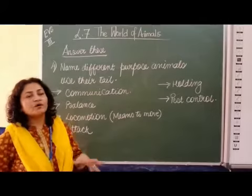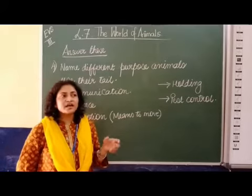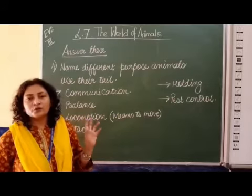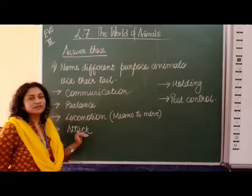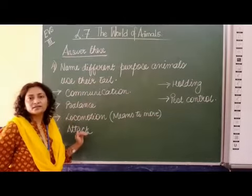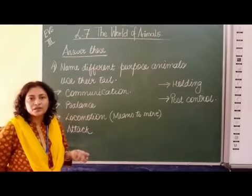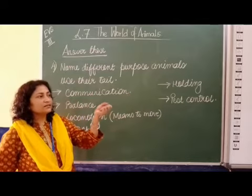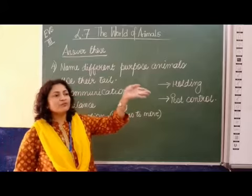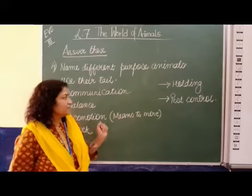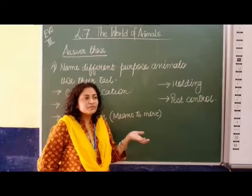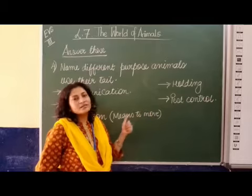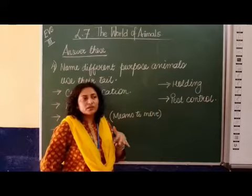Next is protection. If we talk about a scorpion — when it sees an animal, it will attack with its tail, leaving a dose of poison, and run away from there. This way the tail helps them to save their life and protect themselves. Next is holding. As you know, monkeys hold themselves with the help of their tail and go from one branch to another. Next is pest control: animals use their tail to fly away risky flies from their body. This way the tail helps them get safe from insects.